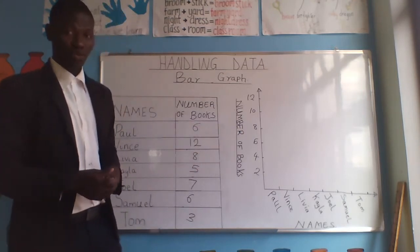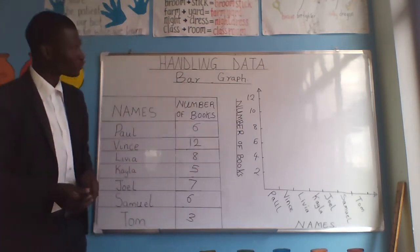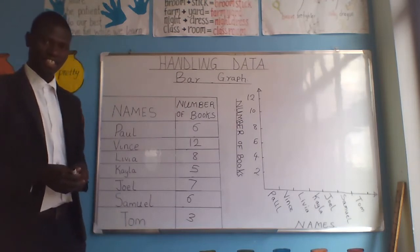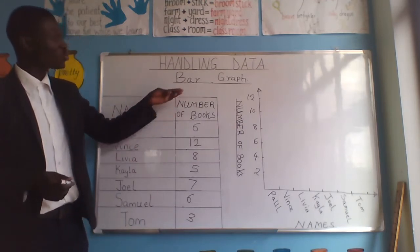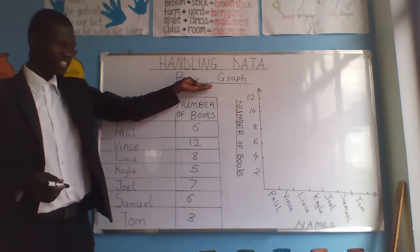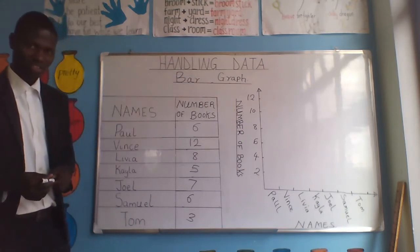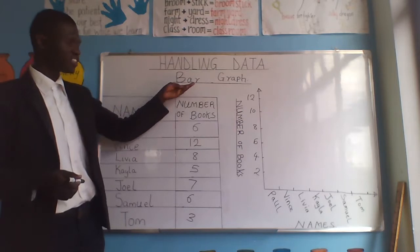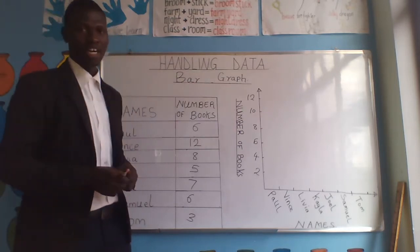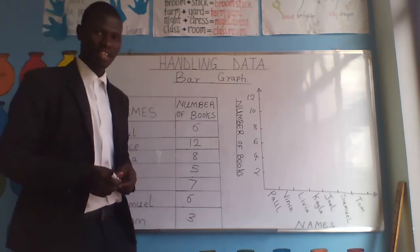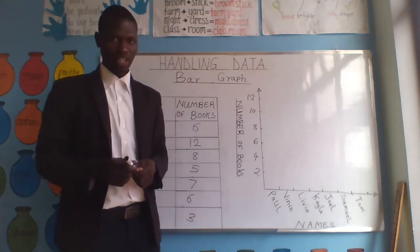Now today we are going to see another method of representing data. Can you read this word? Yes, good. This is bar graph. Bar graph is another method of representing data.